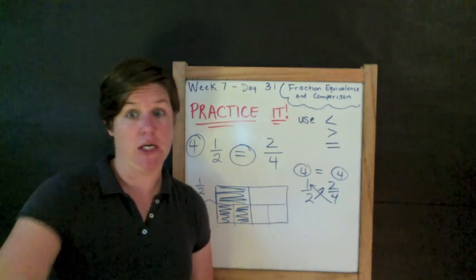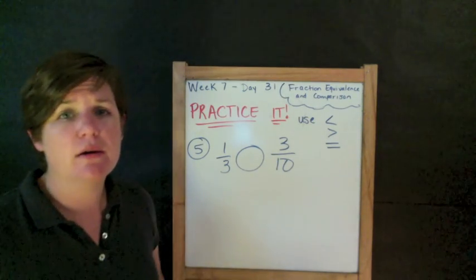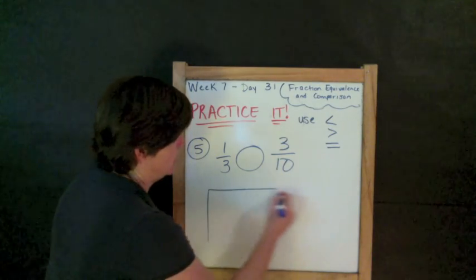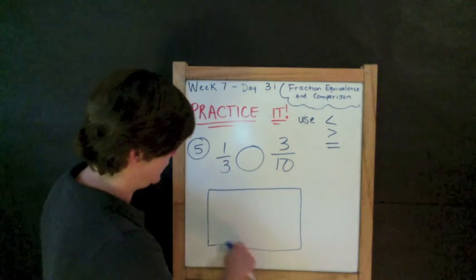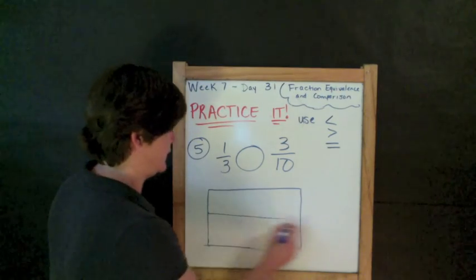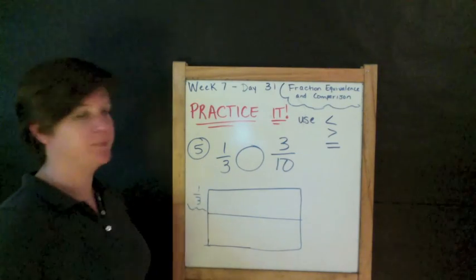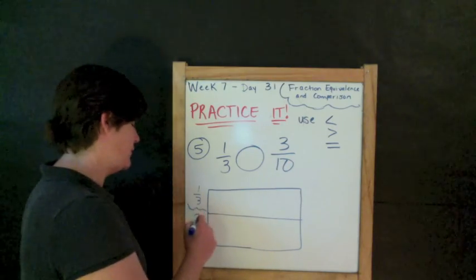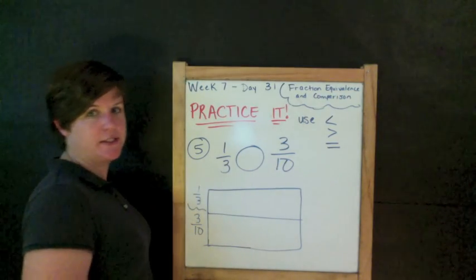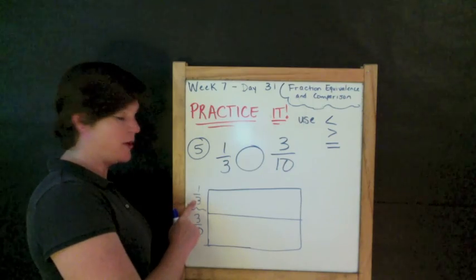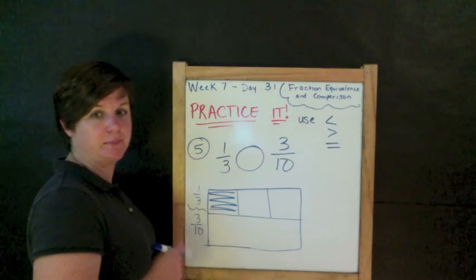One more. Number five. Last one. One-third compared to three-tenths. What do I draw? I draw a rectangle to compare them. One-third. Which fraction am I going to put up here? One-third. Which fraction do I put down here? Three-tenths. How do I draw this? What should it look like? It should be divided into three parts with one shaded. Three parts with one shaded.